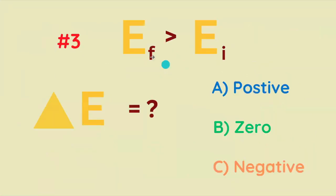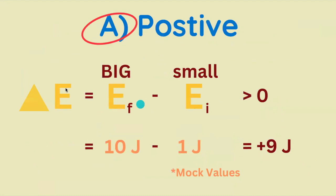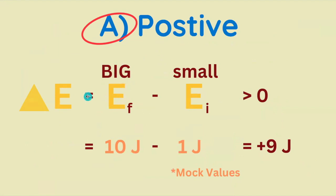Number three, E final is greater than E initial. So does that mean that delta E is positive, zero, or negative? It's going to be positive because delta E equals E final minus E initial. So if, for example, we have ten joules and one joule, it's going to be greater than zero.